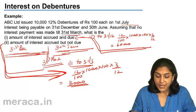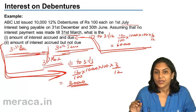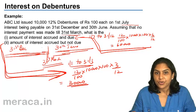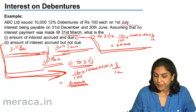I repeat: interest accrued and due is shown along with debentures as part of long-term borrowings. Interest accrued but not due is shown under current liabilities.